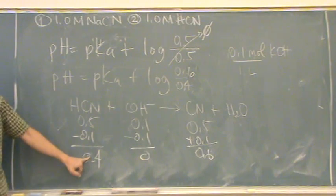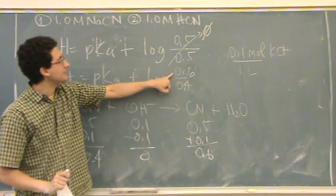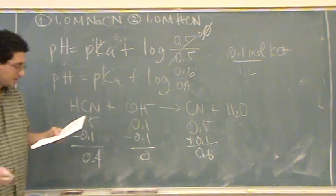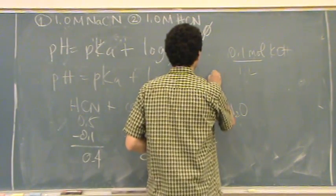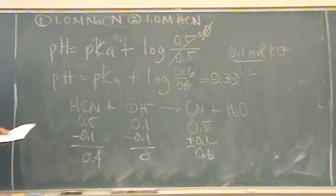The acid is 0.4. The base is 0.6. That's where I got those numbers. This turns out to be 9.39. Is that part okay? I want to make sure buffers are important for tomorrow. Any questions ask now.